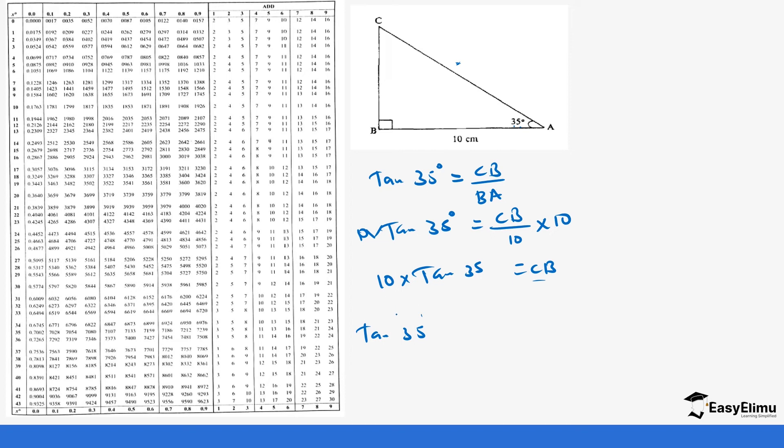You go to the tables where 35 is, as you can see from the table. We are on the lower and the first decimal is 0.0, so it's going to be 0.7002. But remember it's 10 times tan 35 times 10 which will give us 7. So our CB is going to be seven centimeters from the mathematical table.